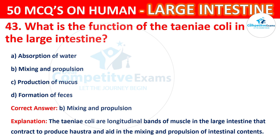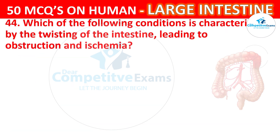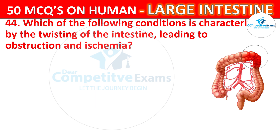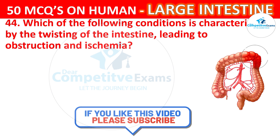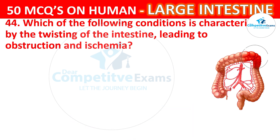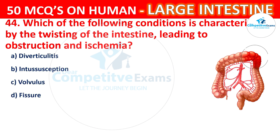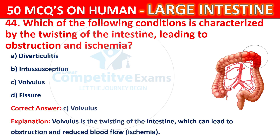Question number 44. Which of the following conditions is characterized by the twisting of the intestine leading to obstruction and ischemia? Your options are Intussusception, Volvulus, or Fissure. The correct answer is C, that is Volvulus. Volvulus is the twisting of the intestine which can lead to obstruction and reduced blood flow.